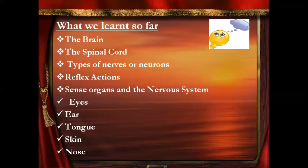So that's what we learned so far: the nervous system, the parts of the nervous system including the brain and spinal cord, the types of nerves, what are reflex actions, and the different sense organs and the nervous system.